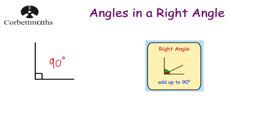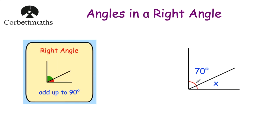Let's have a look at an example. Here we've got a diagram with two angles: 70 degrees and x. Because it's a right angle, these two angles will add together to be 90 degrees. So if we want to work out the size of angle x, we'll just take 70 away from 90 and that will tell us the size of angle x.